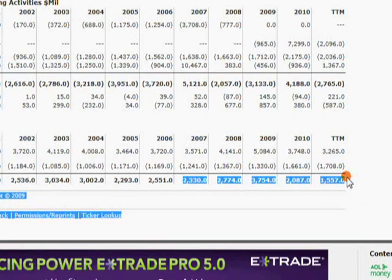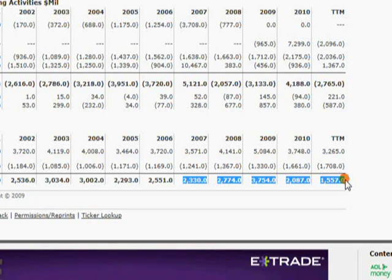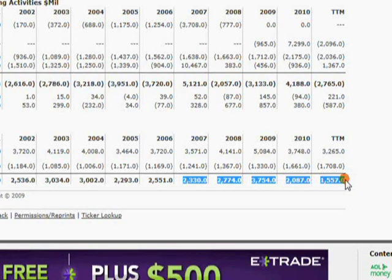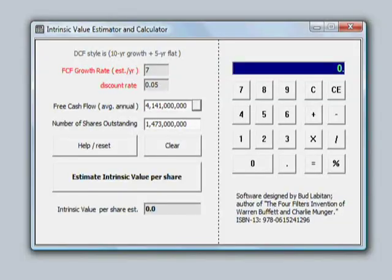And if you enter today's market price of Kraft, let's say it's about $35 today, hit OK. It goes ahead and calculates the figure, and from what we can see here,